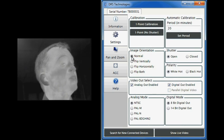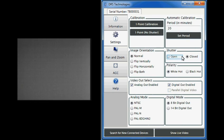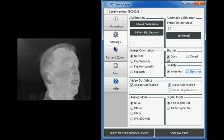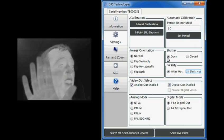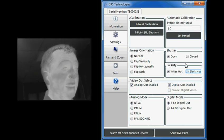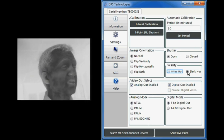Under shutter, you can use the radio buttons to select open or closed. For polarity, click the radio buttons to select white hot or black hot. White hot is the most common mode for viewing thermal imagery. This means that higher temperature objects appear white in the display. If you select black hot, higher temperature objects will appear black, which is an advantage in some situations.